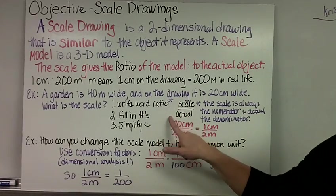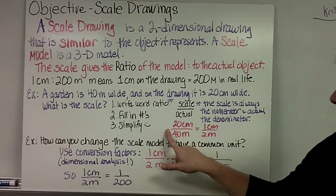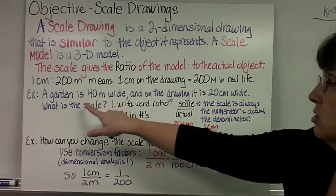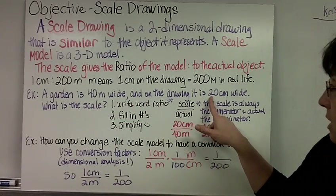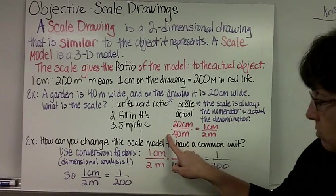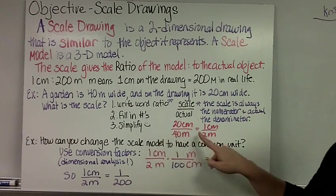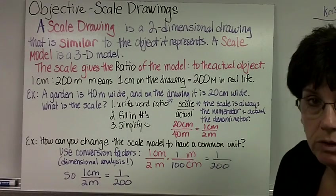So I'm going to write scale over actual. I'm going to go back to my word problem and find what they gave me. The actual is 40 meters wide and the drawing, that's the scale, is 20 centimeters. So I write 20 centimeters over 40 meters, and then simplify: 20 over 40 is 1 centimeter over 2 meters.